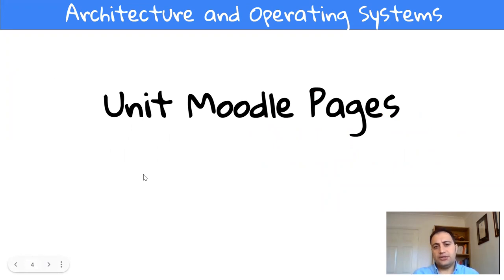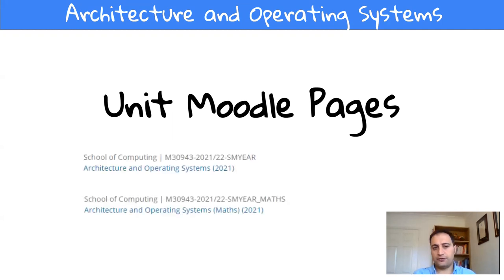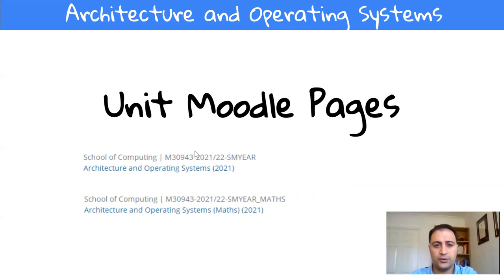Your personal tutor or course leader will talk about Moodle. Moodle is a platform where all the information you need for your studies about all the modules is available. This module has got two parts, and because of that, for simplicity, we created two Moodle pages. One of them is called Architectural Operating System, which is about the computer part. The other one, Architectural Operating System Maths, is about the maths part. You need to look at both pages.